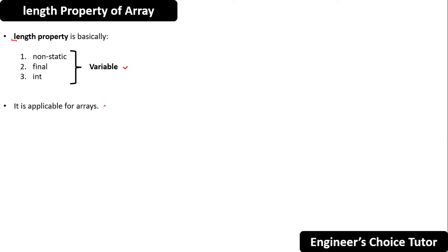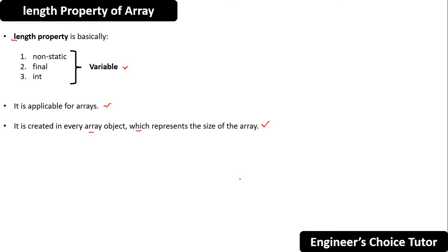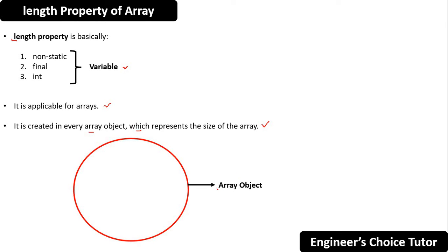The length property is applicable for arrays. It is created in every array object, and this property represents the size of the array. When an array object is created, the length property gets initialized with the size of that array. In your program you can use this length property to know the size of the array during runtime.